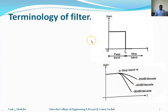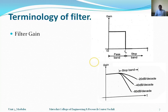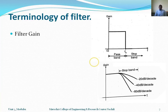The first terminology of a filter is filter gain. Filter gain is the ratio of filter output to filter input — simply the ratio of output with respect to input. In other words, we can call it the efficiency of the filter: how well it filters the signals. That is the gain of that particular filter.